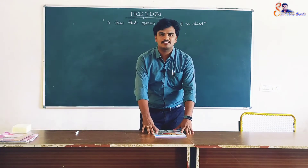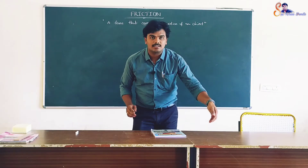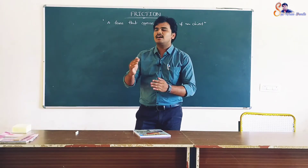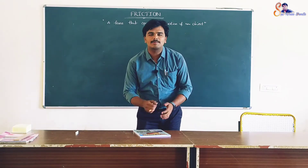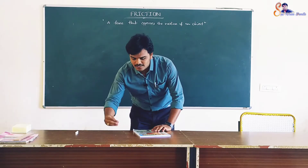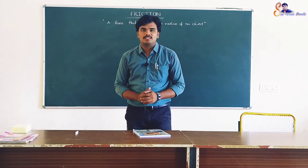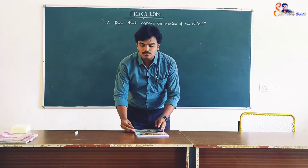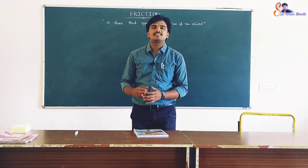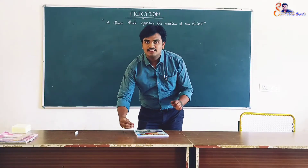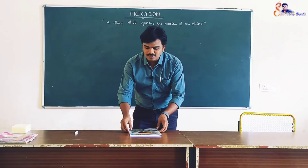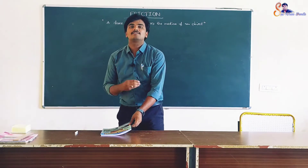Suppose this is an object. We apply force, it goes some distance and stops. Why does it stop even when force is applied? That means some opposite force is applied here. So that opposite force is what stops the book's motion. That force which opposes the motion of an object is called friction. The friction is what opposes the object's motion.